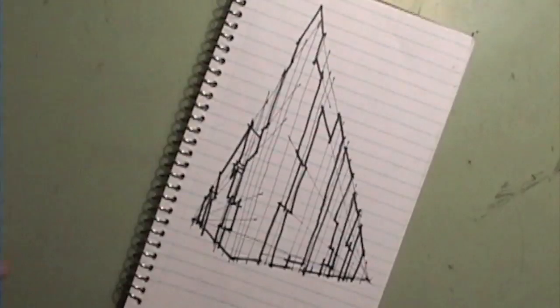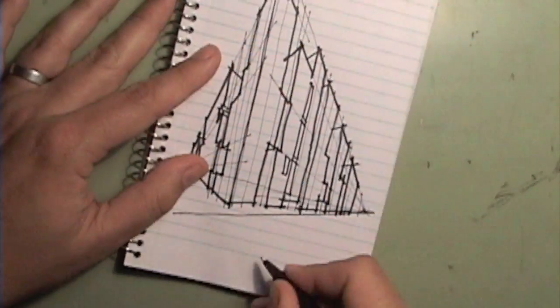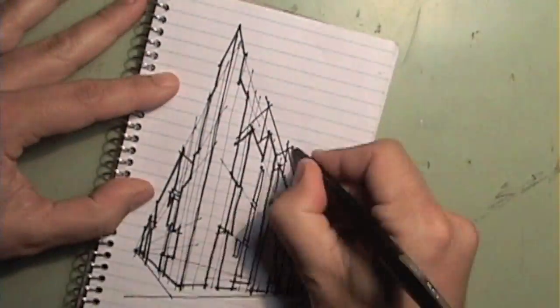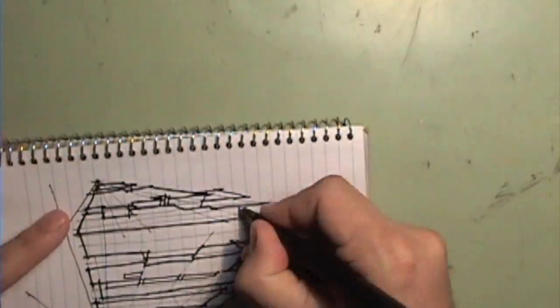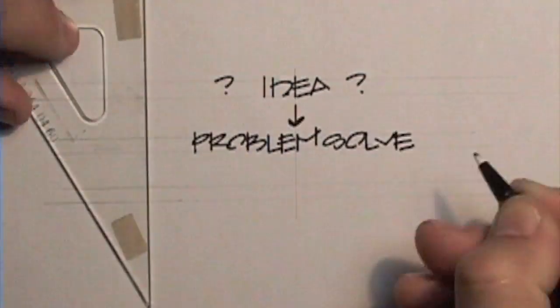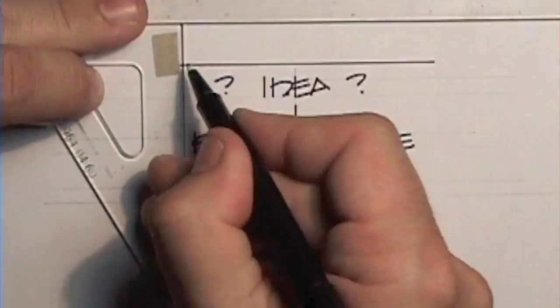However, contrary to popular thought, being creative is not the same thing as being a good designer. Design involves problem solving, and that is something you'll learn more about in higher education. When it comes to architecture, problem solving is about taking an idea and turning it into something real, like a building.